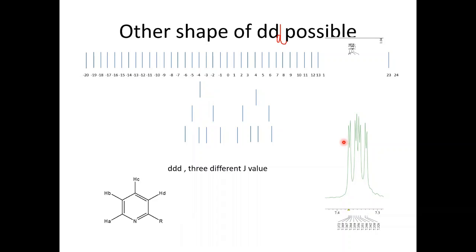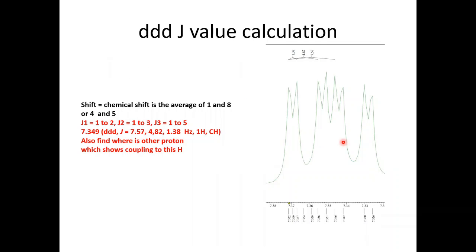How you calculate the J value in this system? This is an 8 peak. Just click on this one, click on this one. You will get the difference multiplied by the frequency of spectrophotometer. You will get 1.38. Click on this one, click on this one, peak two, peak three. You will get J value.